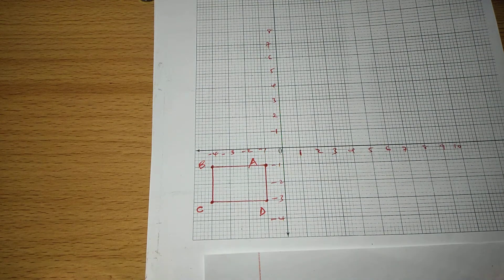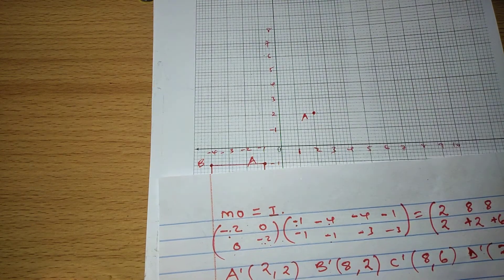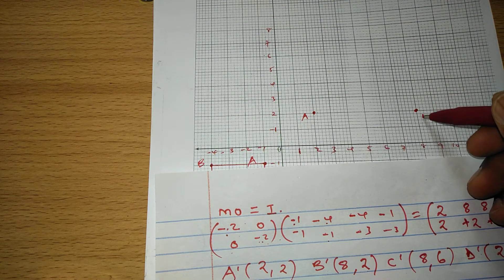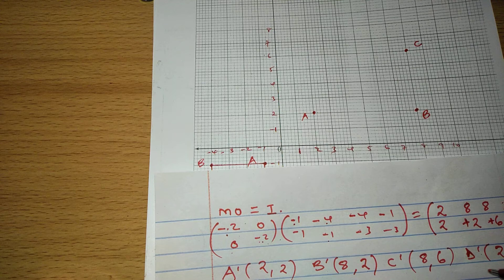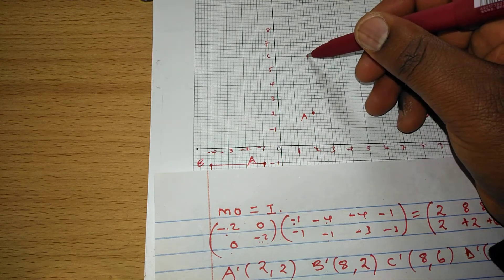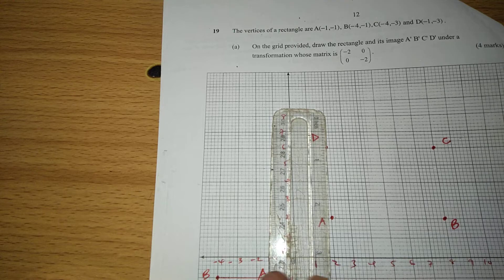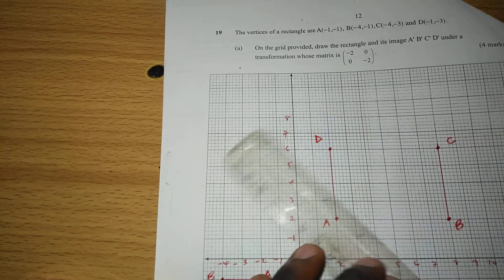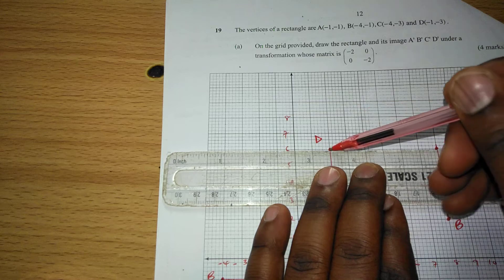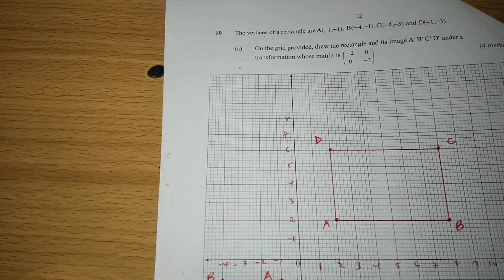Now we plot the image rectangle. A' is at (2, 2), B' is at (8, 2), C' is at (8, 6), and D' is at (2, 6). This is the image rectangle after the transformation — the rectangle has moved here on the grid.